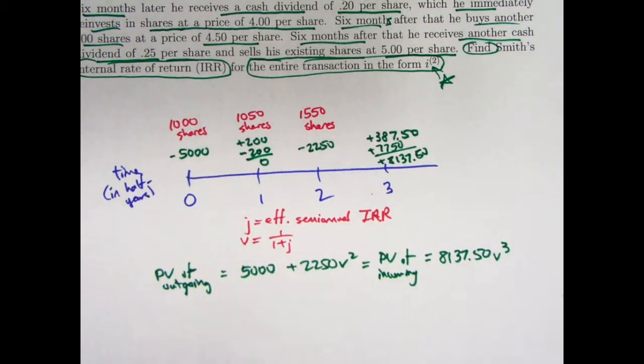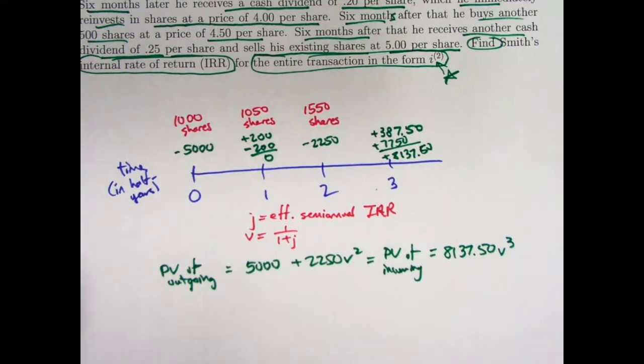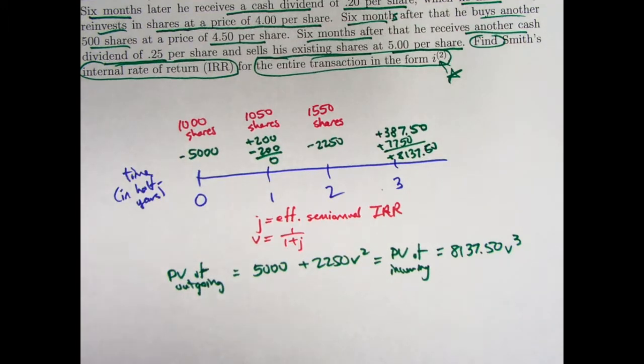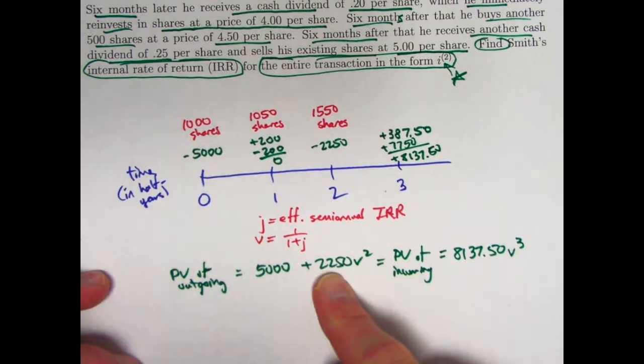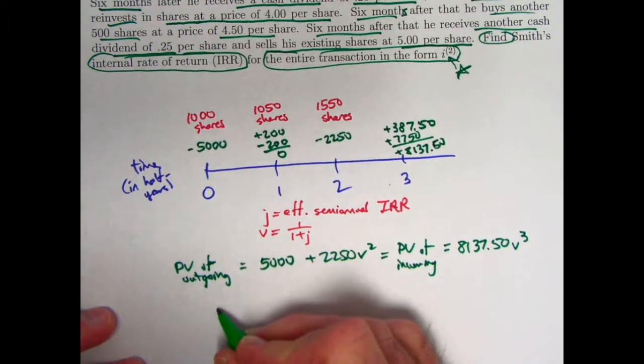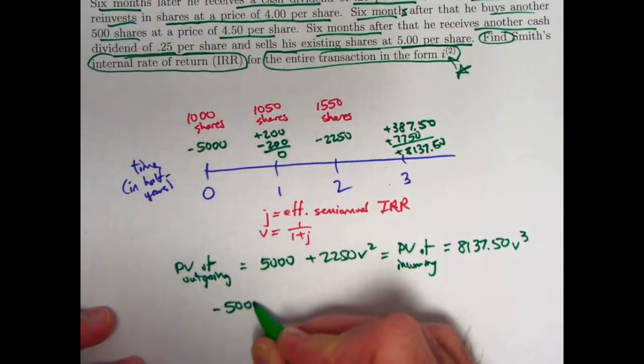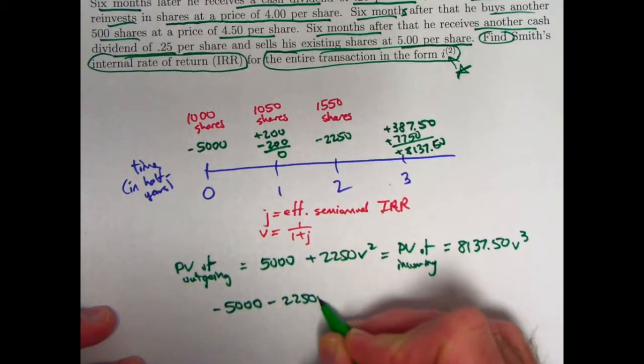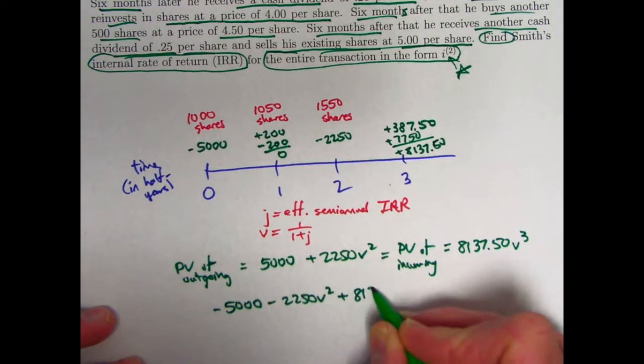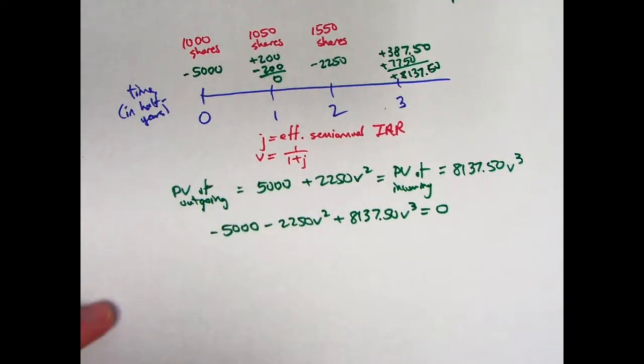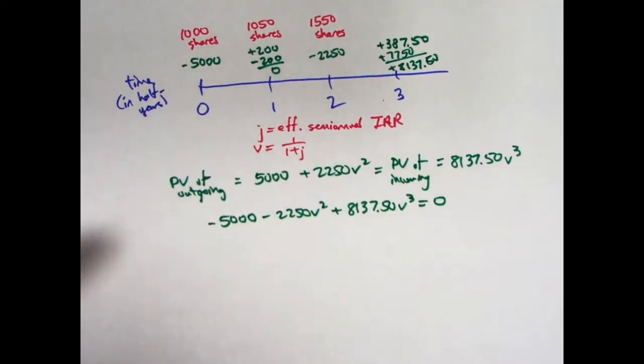The PV of the outgoing money is 5,000 plus 2,250V squared. That should equal the present value of the incoming money: 8,137.50V cubed. We want to reemphasize that we've got outgoing money as negative amounts and incoming money as positive amounts. I'll subtract from both sides to get 0 on one side: negative 5,000 minus 2,250V squared plus 8,137.50V cubed equals 0.